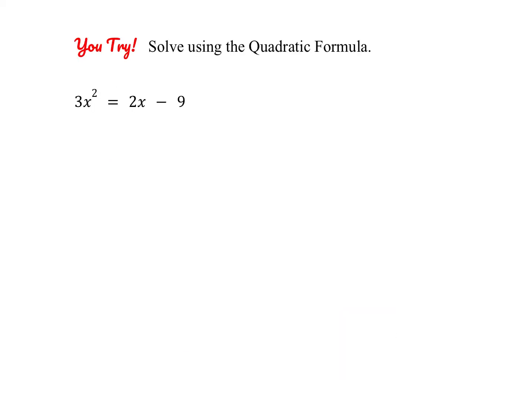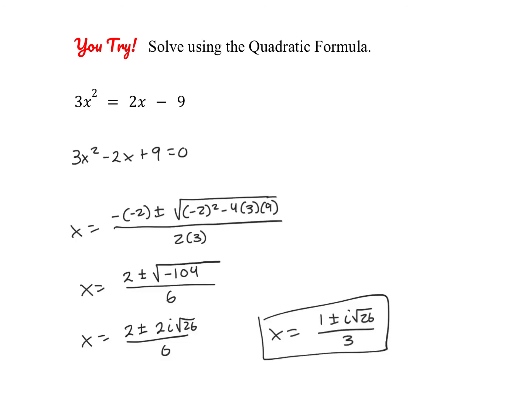So go ahead and pause the video and give this one a try on your own, and we'll check your answer in just a few seconds. Okay, go ahead and check your work here. Make sure that you've simplified your radical completely. We have the square root of a negative, which is why we have this imaginary number. This does become 2i root 26, and this we can simplify further to 1 plus or minus i root 26 all over 3.